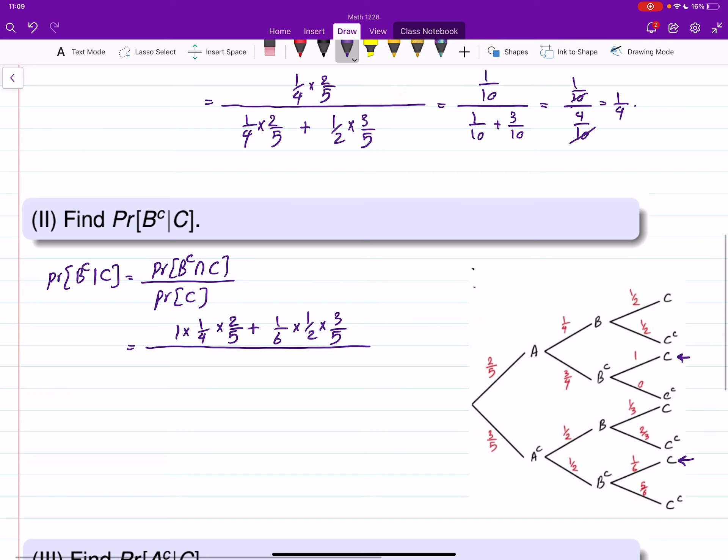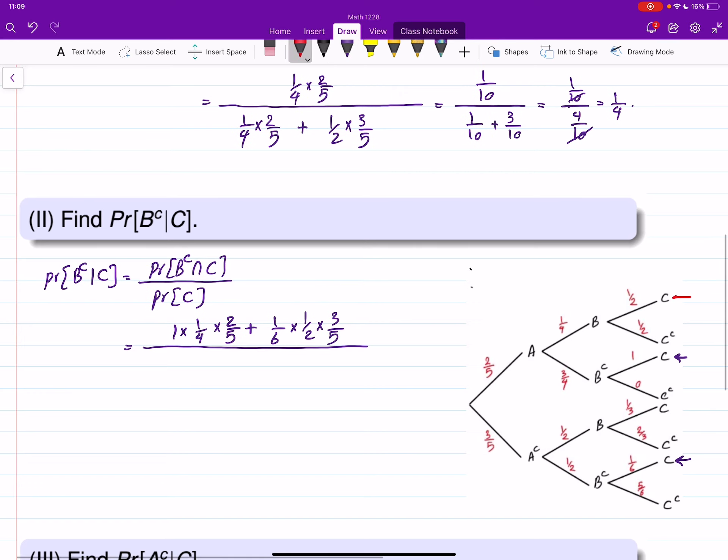For probability of C we have 1, 2, 3, 4 paths ending to C. So I have to find probability of each one and then add these. The first one is 1 half times 1 over 4 times 2 over 5.